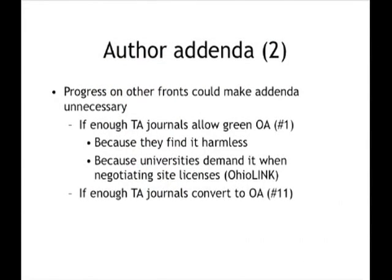It's possible that author addenda may never reach the crossover point because they become unnecessary. The main purpose of an author addendum is to get permission to deposit a peer-reviewed manuscript in an open access repository. But if most journals adopt that policy on their own, then we don't have to ask through an addendum — and as I said, 63% of subscription journals already grant blanket permission for that. As universities and funding agencies require authors to retain certain rights and use them to authorize open access, journals essentially accommodate it because they have no choice, making addenda unnecessary as well.